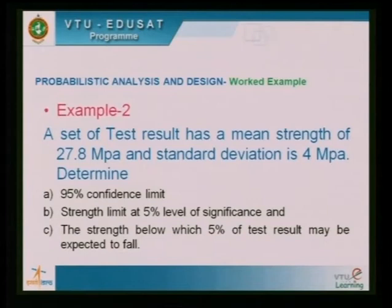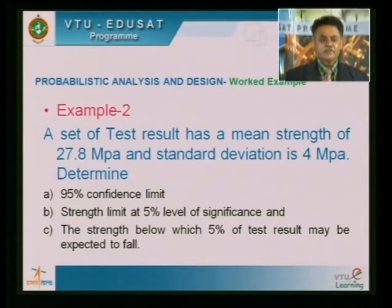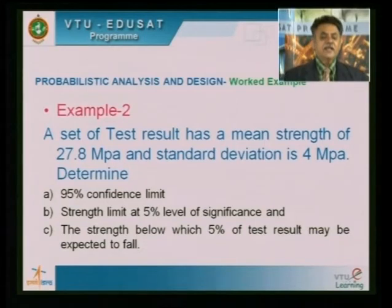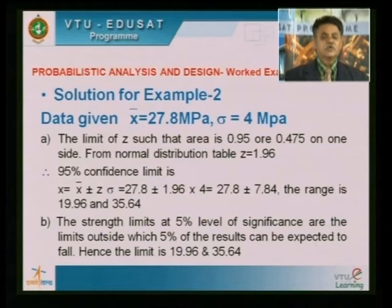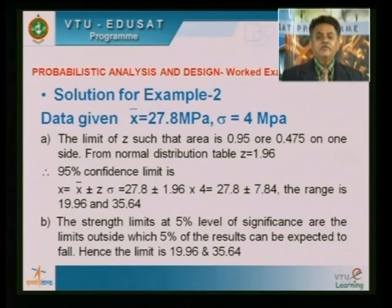Example 2: A set of test results has mean strength 27.8 MPa and standard deviation 4 MPa. Determine the 95 percent confidence limit — the limits x1 and x2. The data: x-bar = 27.8 MPa, sigma = 4 MPa. For area = 0.95, each side = 0.475. From the normal distribution table for 0.475, z = 1.96. This time you reverse-look up: find where 0.475 appears in the table, then read z from the first column.